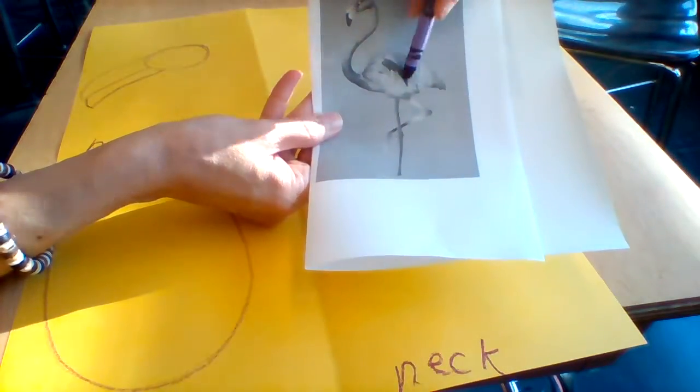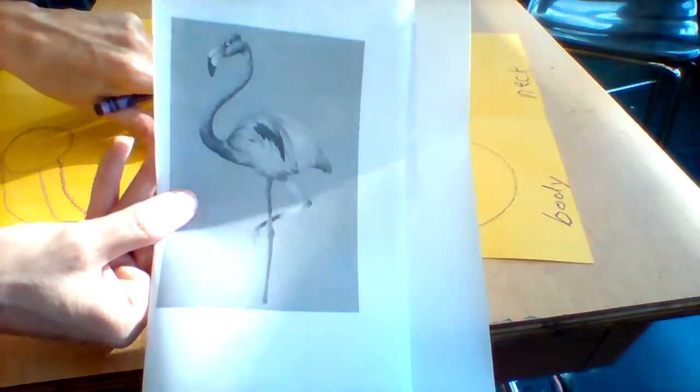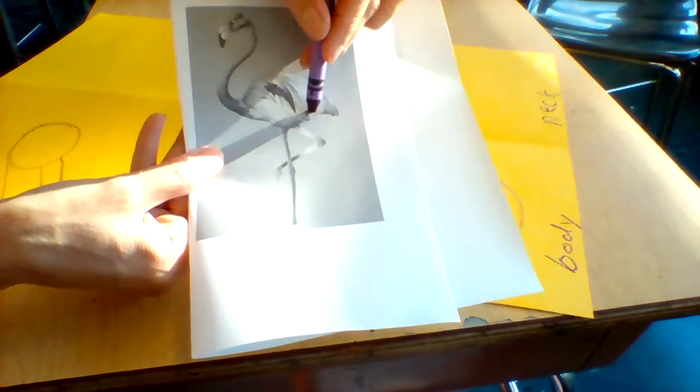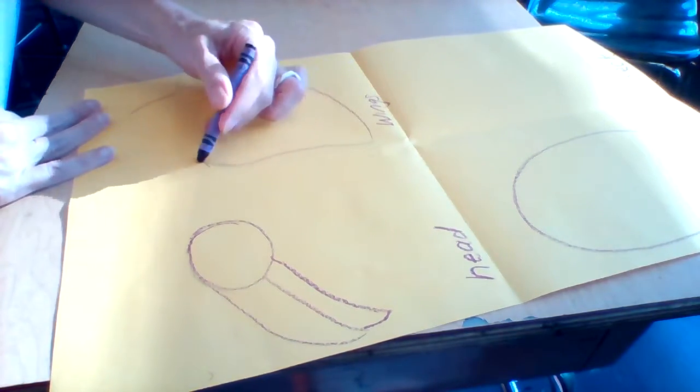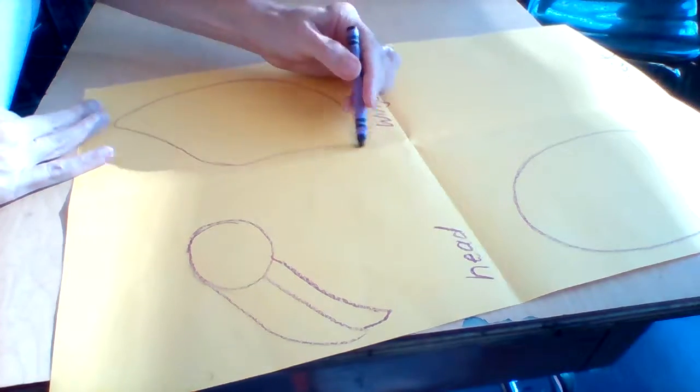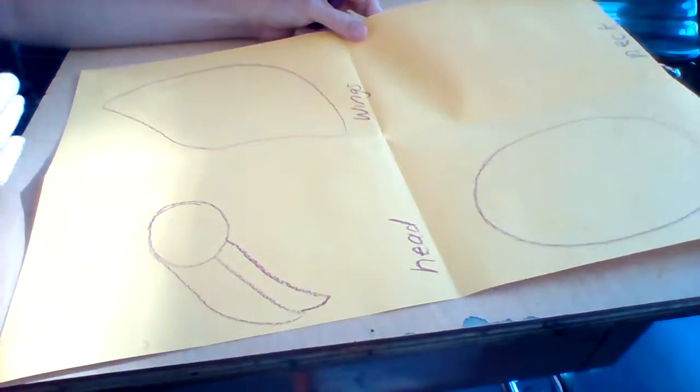And then look at these wings. Do you think the wing is kind of close to the body shape? It looks like it to me. Maybe just a little bit different on the bottom. So I'm going to do one wing because my flamingo isn't flying. I'm not going to go in and put my details. That'll be later.